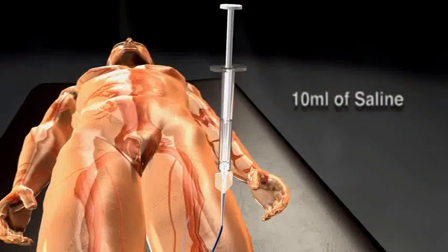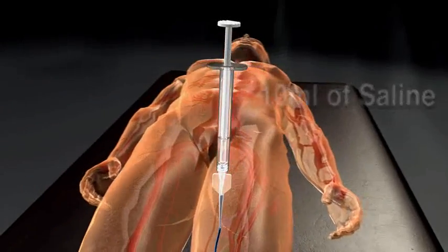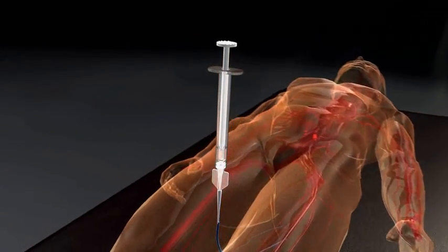Flush the contrast from the microcatheter with 10 mL of saline to expel the contrast media. Leave the syringe connected to the catheter.